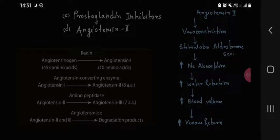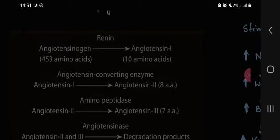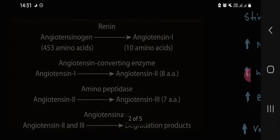Angiotensinogen is converted into angiotensin-1 by renin. Angiotensin-1 is converted into angiotensin-2 by angiotensin-converting enzyme ACE. Angiotensin-2 is converted into angiotensin-3 by aminopeptidase. Angiotensin-2 and angiotensin-3 are degraded by angiotensinase.